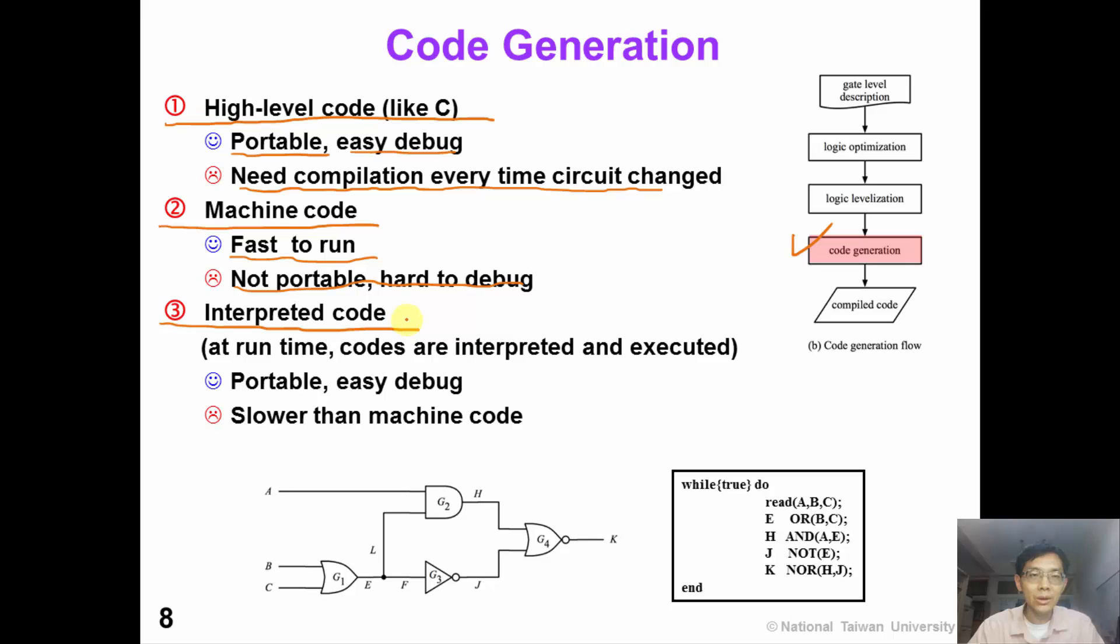The third code is called interpreted code, such as this code. It's not a C code. It's not a machine code. This kind of interpreted code can be interpreted at runtime and executed. It's very portable and easy to debug. Runtime is a little bit slower than the machine code.